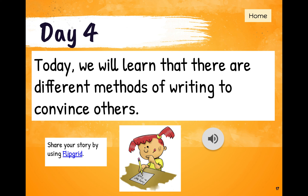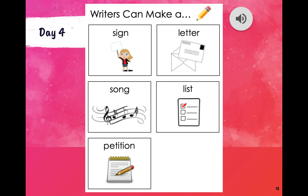You don't have to just write it in a story. These are the five ways that you can use to convince others: writers can make a sign, showing people what they need to do or why they should do it. You can write a letter directly to that person, write a song, a list, or a petition.